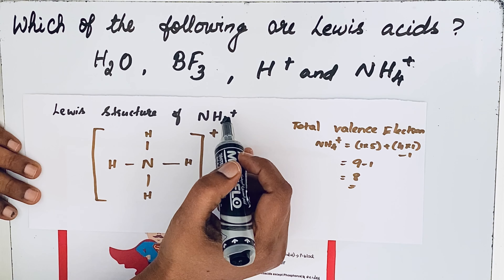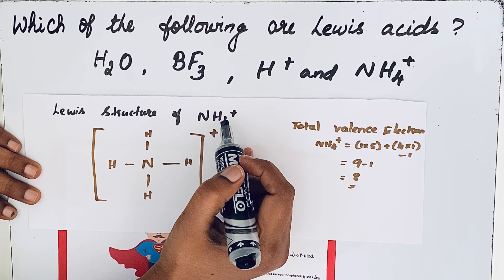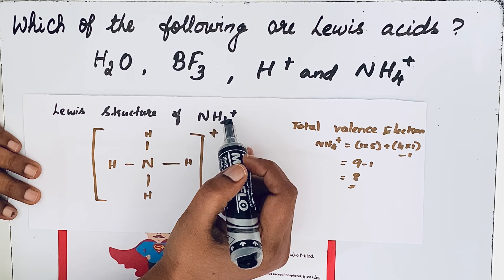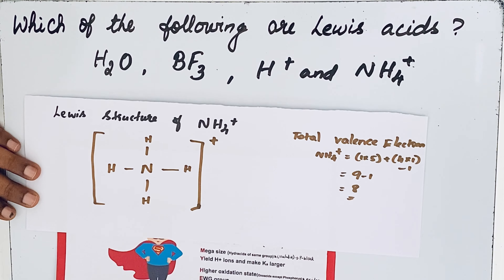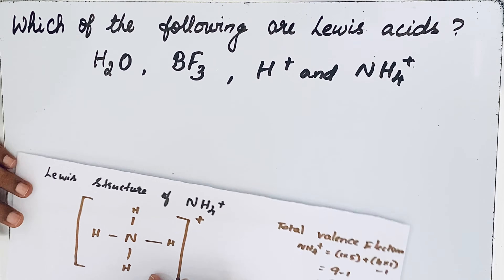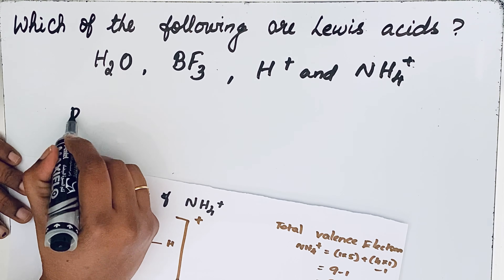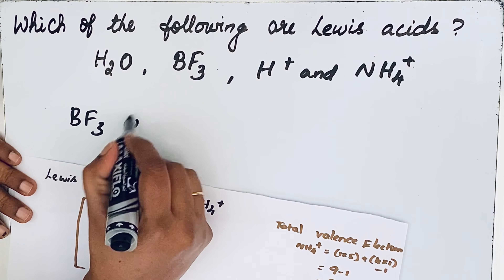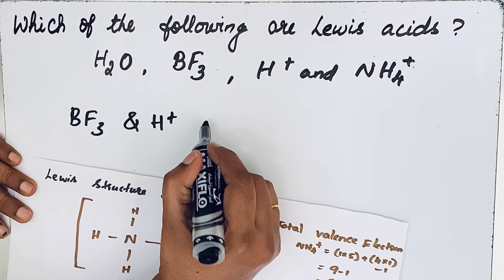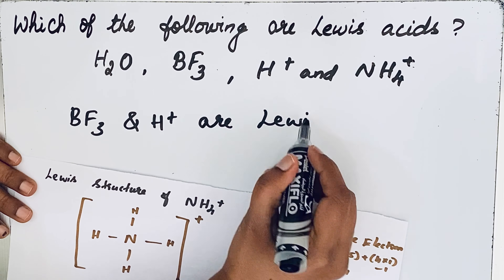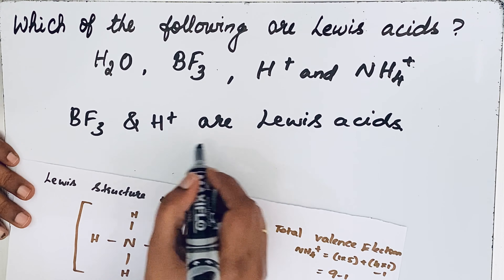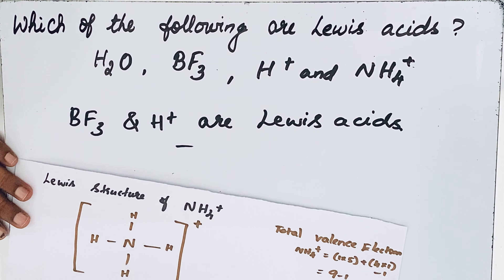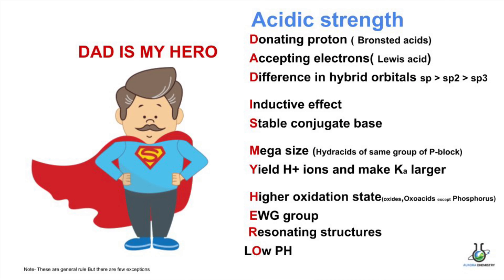So among these four examples, BF₃ and H⁺ are Lewis acids. Just remember this and you can solve all questions of this type very easily. Thanks for watching.